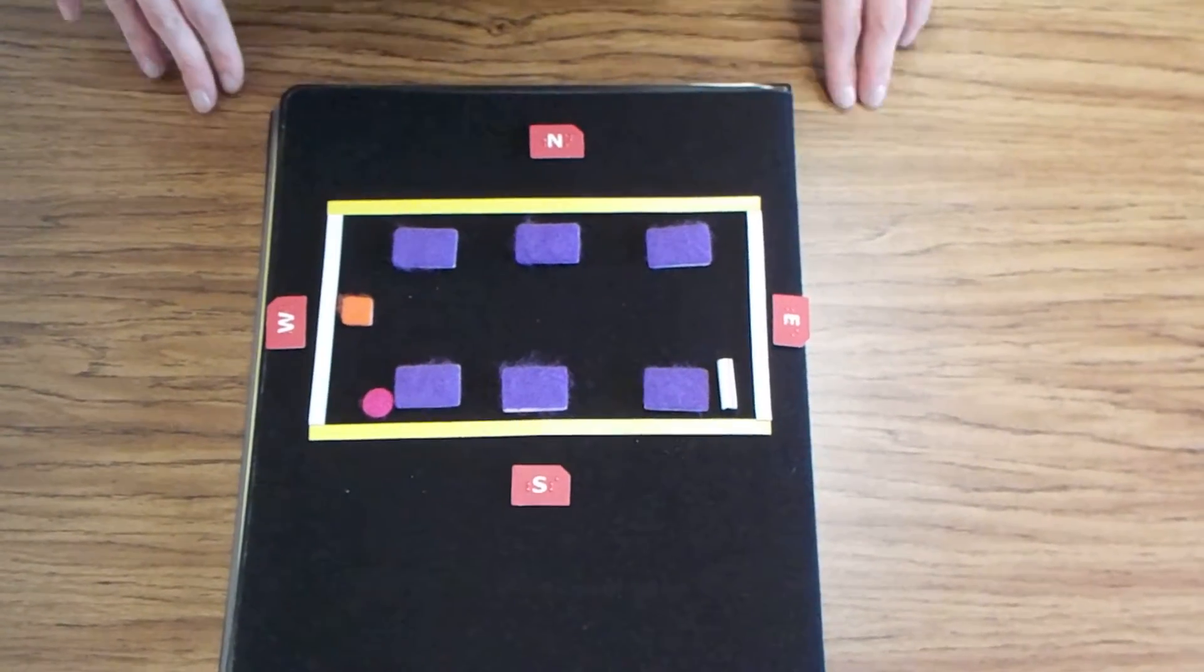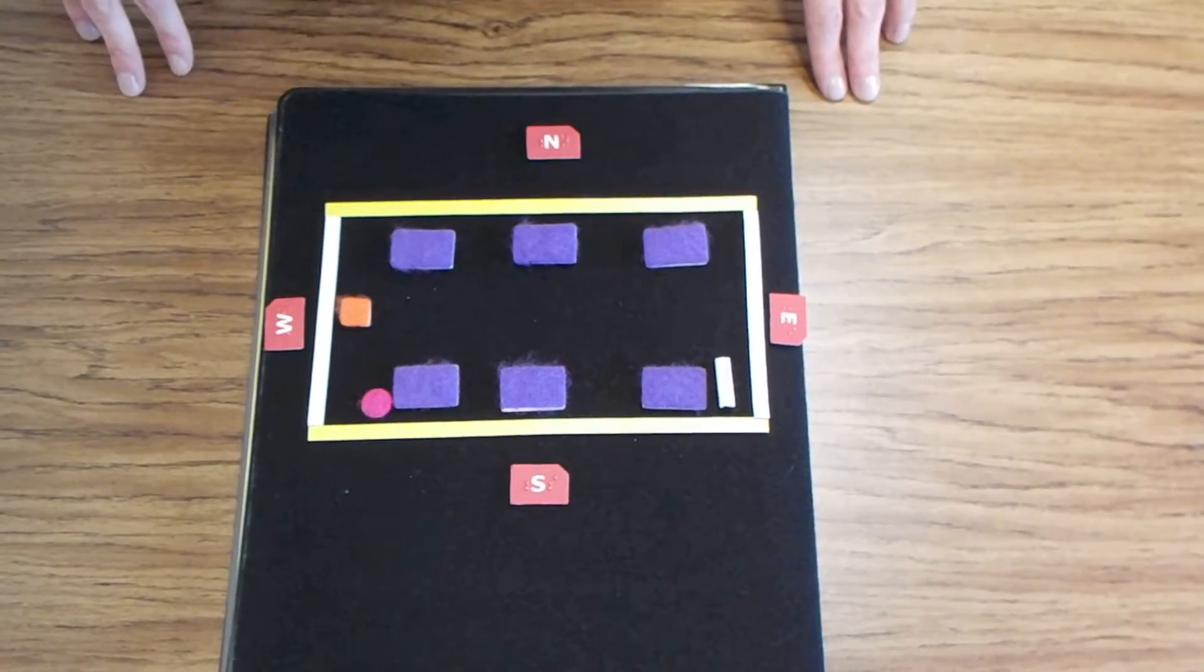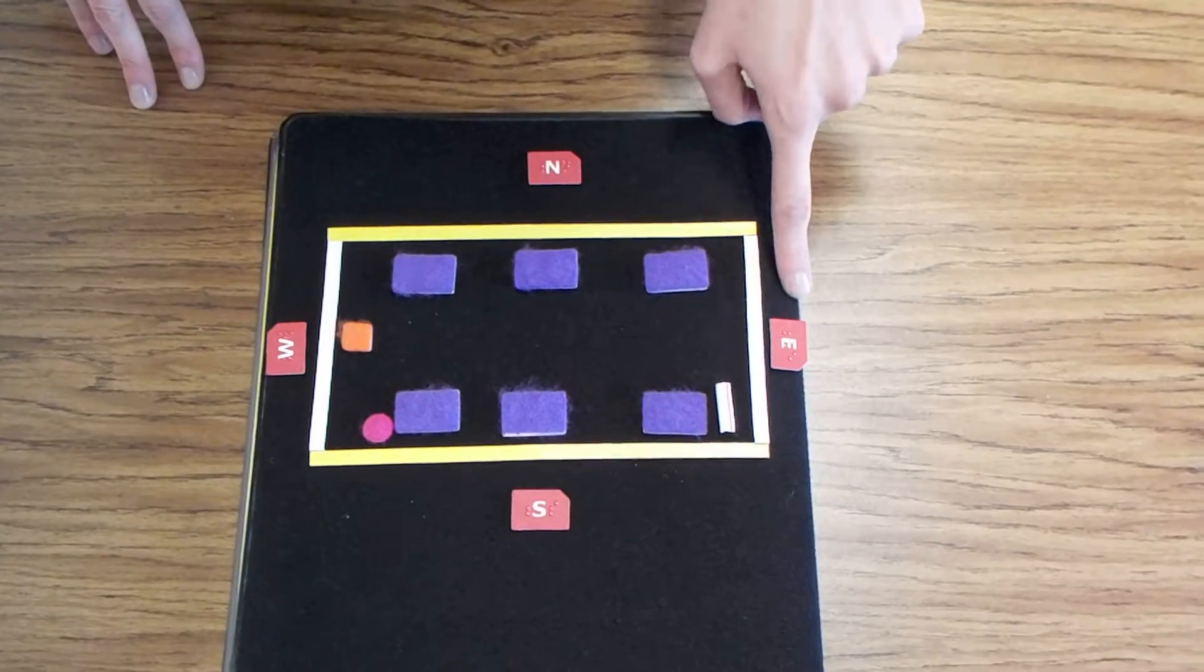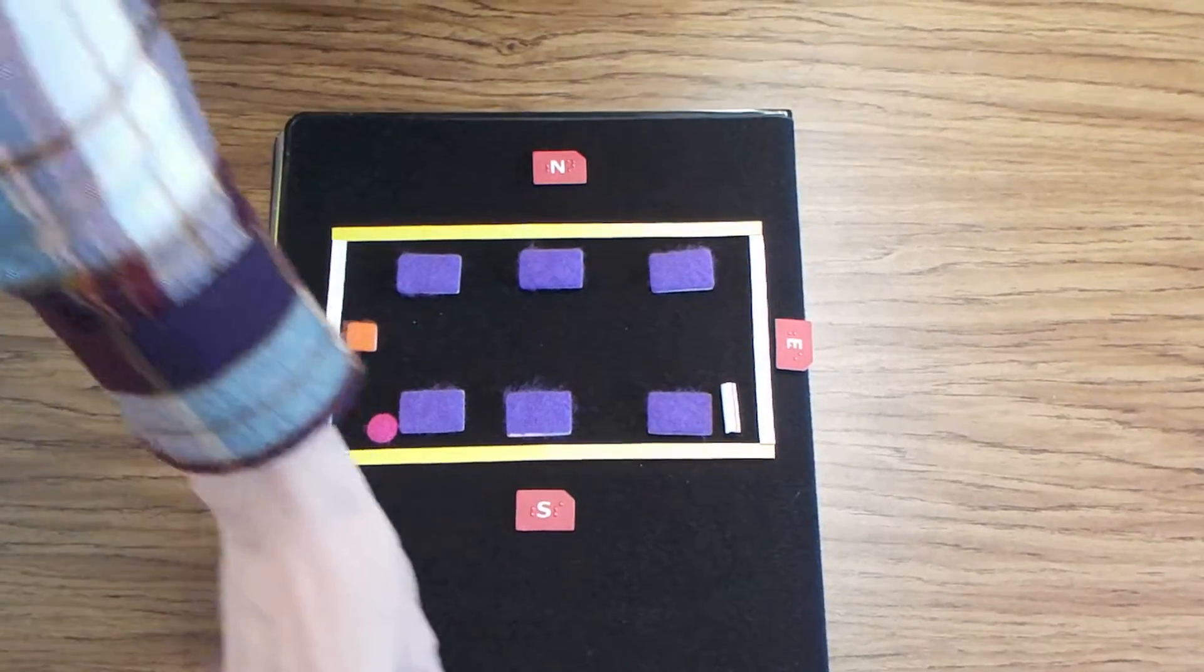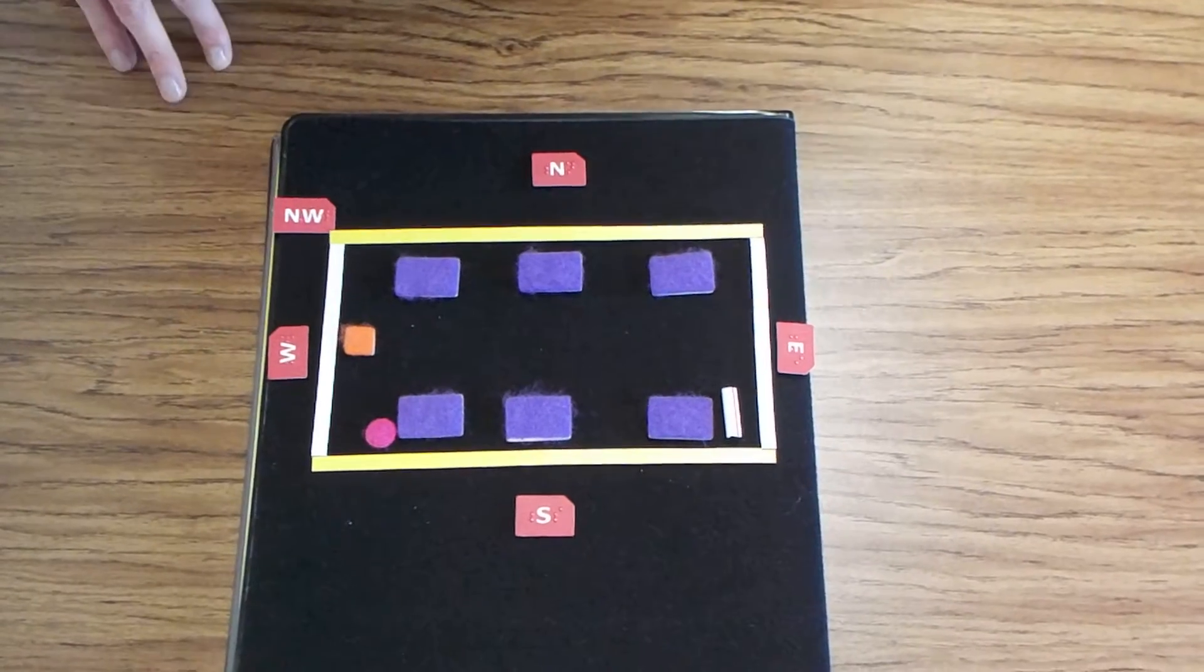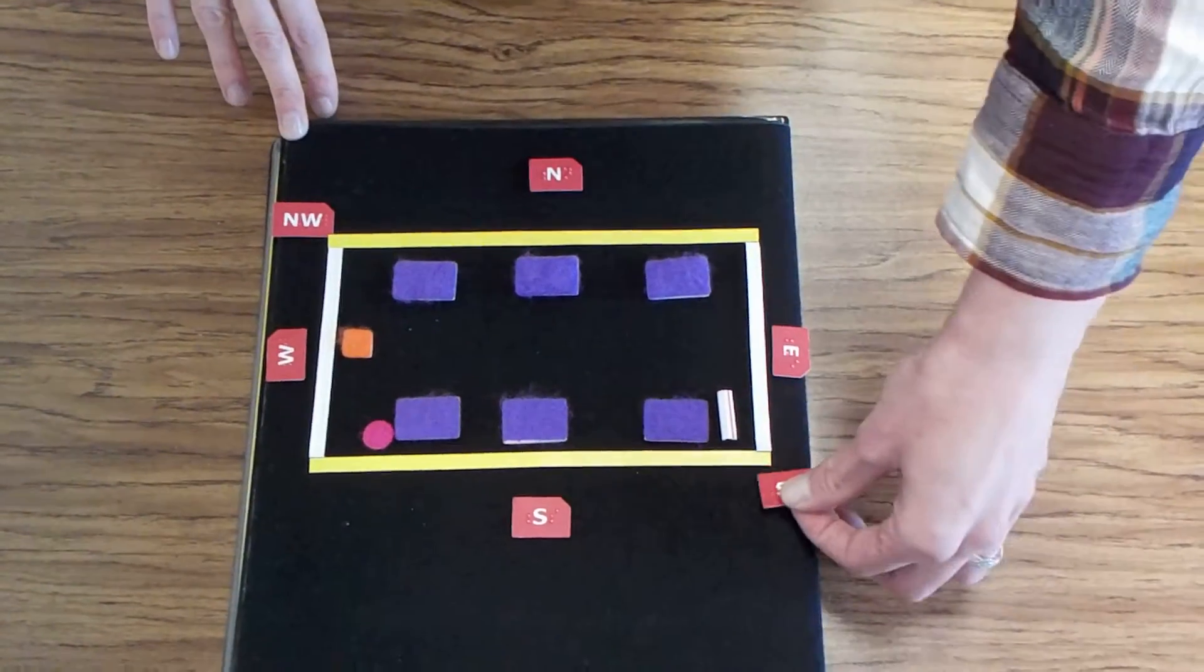Using the map, have your child practice simple compass directions - north, south, east, and west - or more advanced compass directions, such as the northwest corner of the block, the southeast corner of the block.